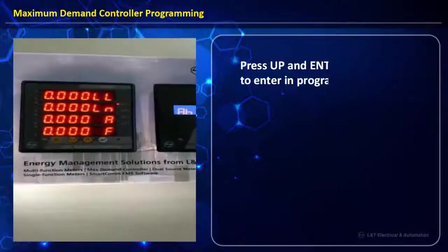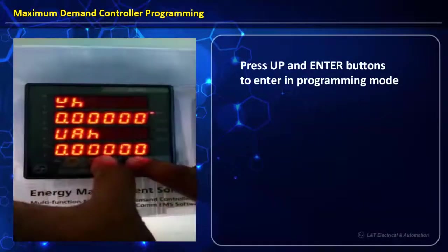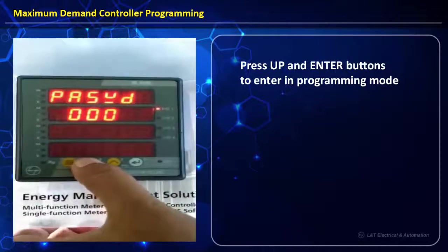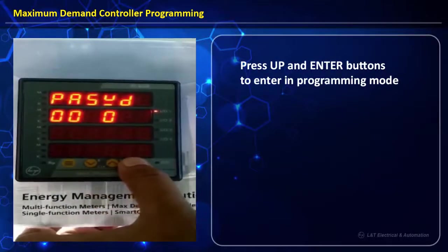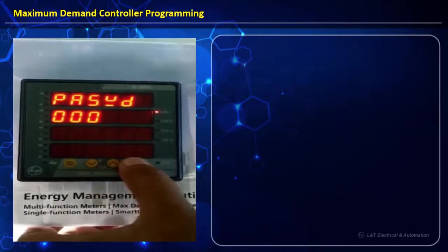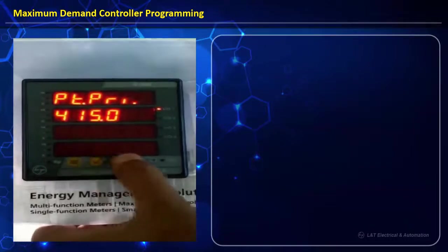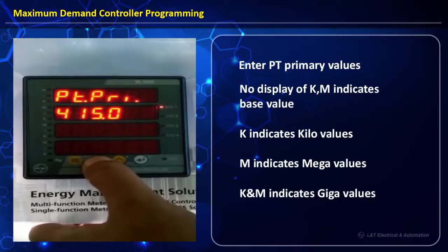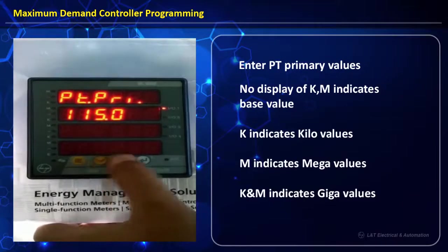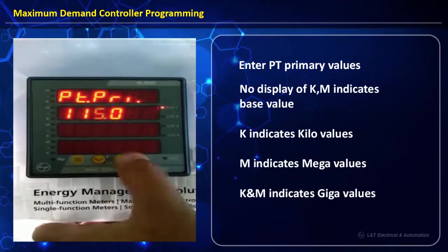To enter programming mode, press the Up and Enter buttons and provide the correct password. By default from the factory, 415 is set as PT primary. We will change this to 11 kV by selecting the appropriate digits.